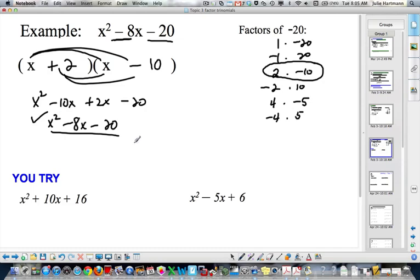That is it for factoring trinomials. Alright? You take the last term, you find the factors, and then you decide which of those factors adds up to the middle term. Okay? There are your two you-tries. Go ahead and try them. We will go over them in the next class. Thank you.